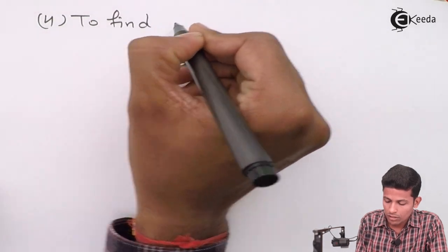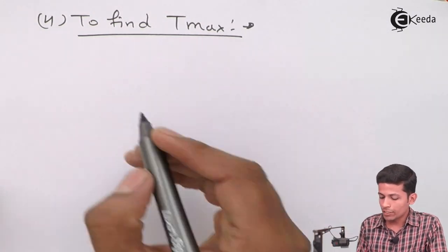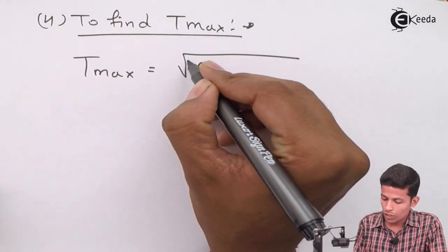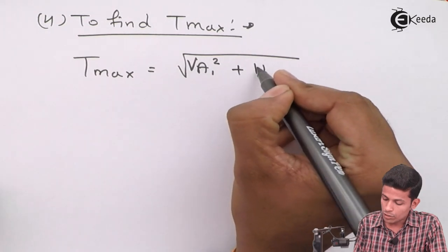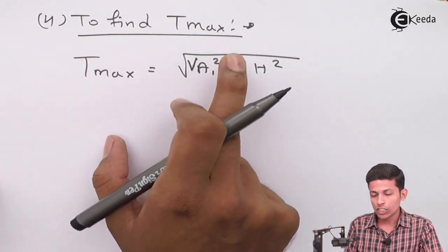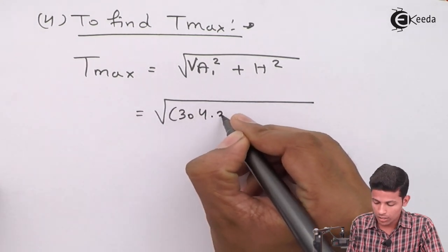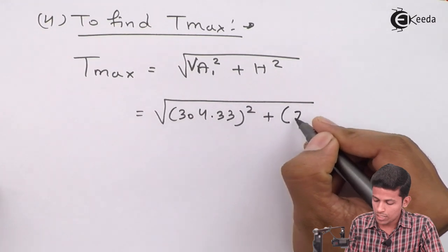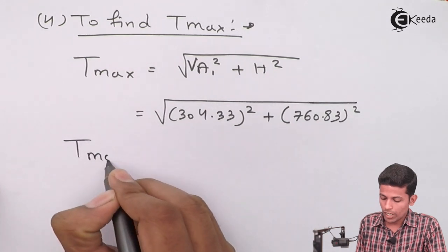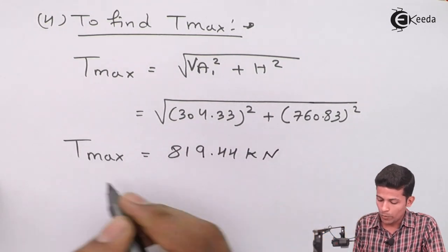Since the cable is supported at the same level, VA' = VB' = WE×L/2 = 5.07×120/2 = 304.33 kN. Step 4: Find T-max. The formula for maximum tension in the cable is: T-max = √(VA'² + H²) = √(304.33² + 760.83²) = 819.44 kN.